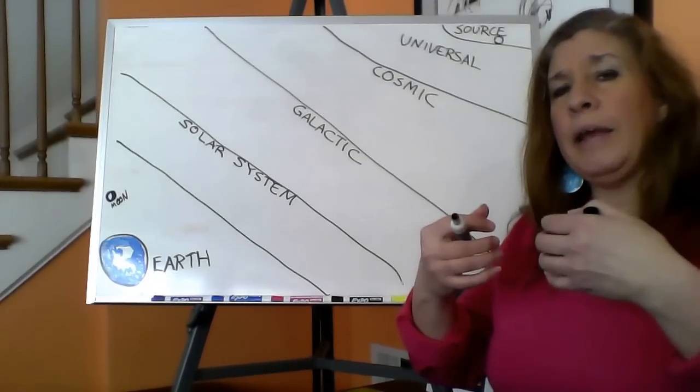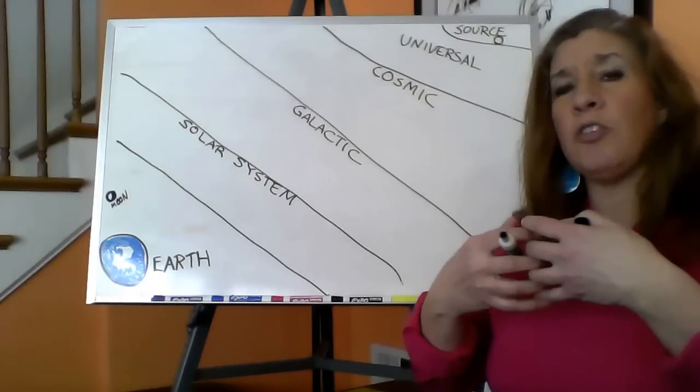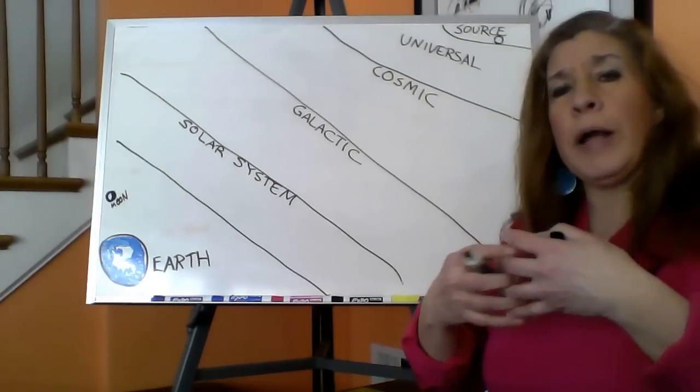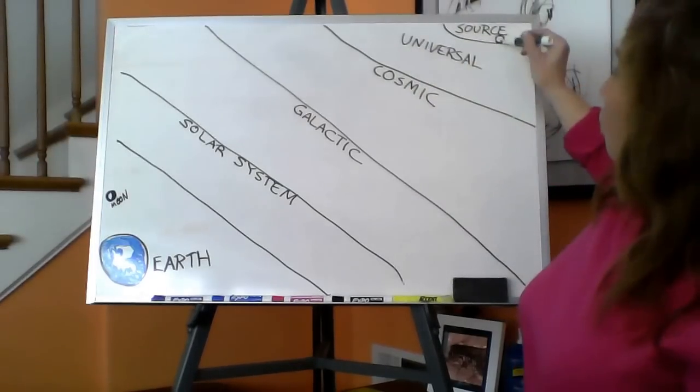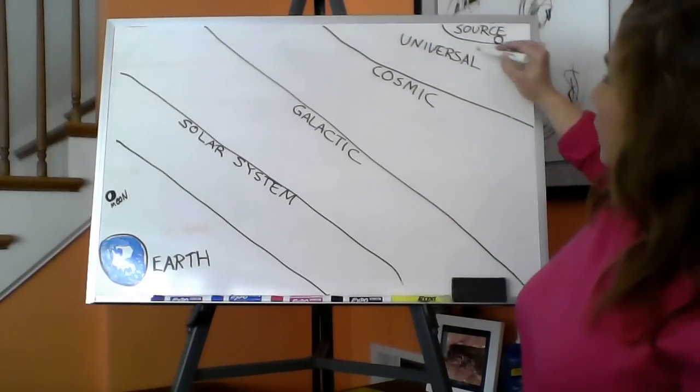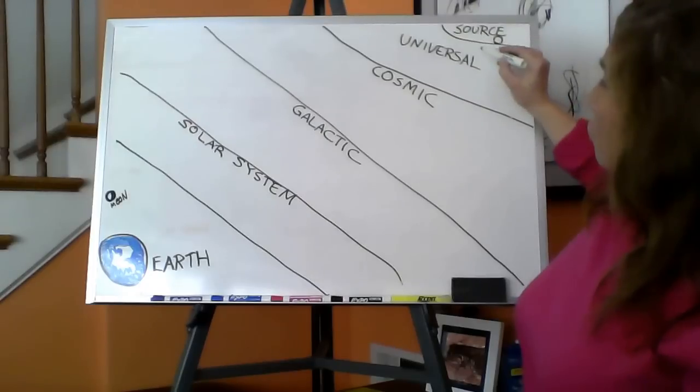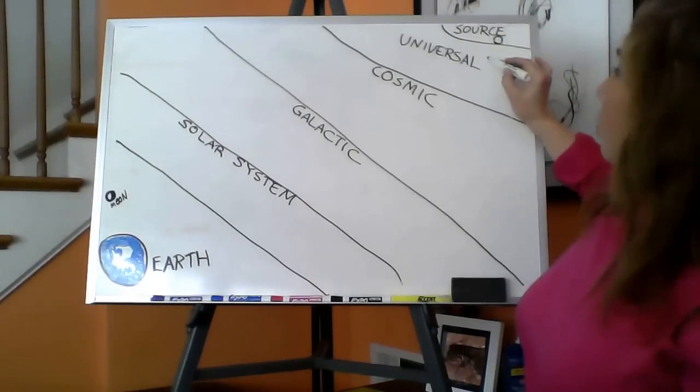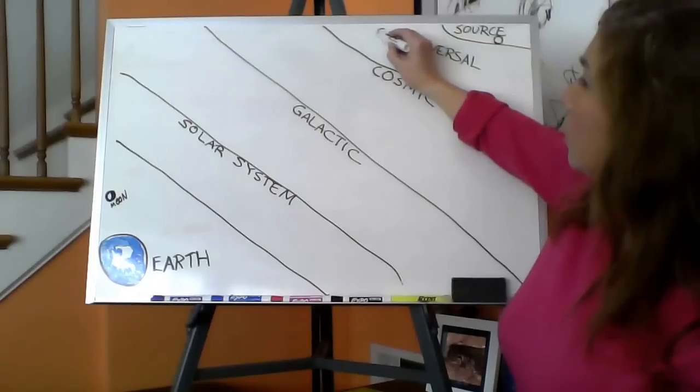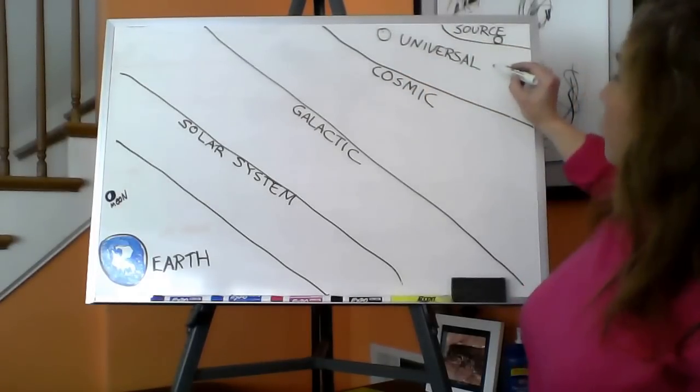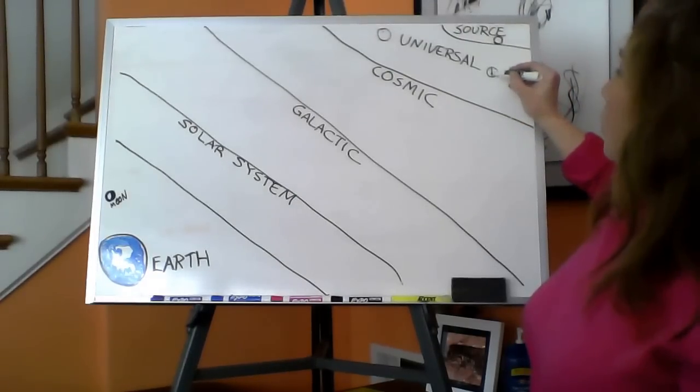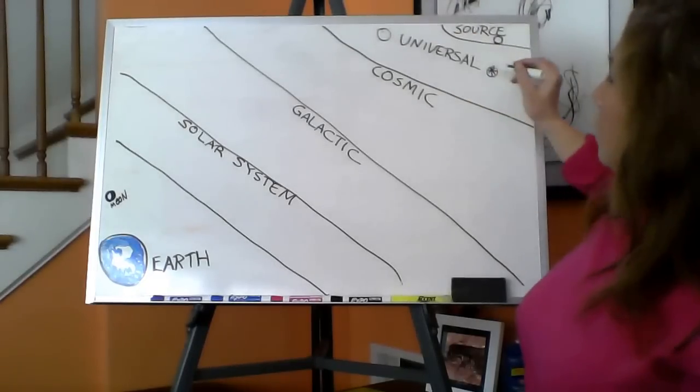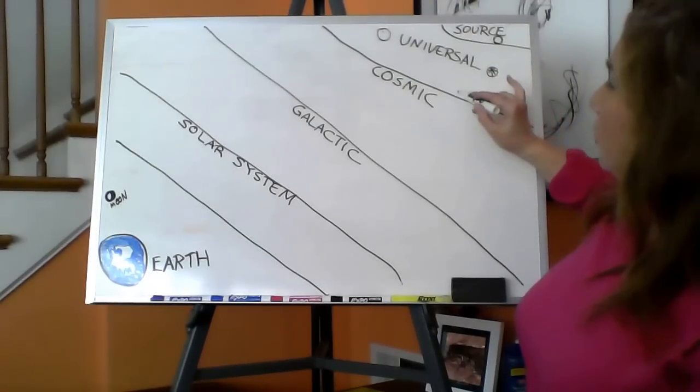We went and explored at the universal level. At the universal level, we are in our oneness, still in one form as an orb with all of our energetics inside. We were able to move about when we moved into other levels, other paradigms of experience.